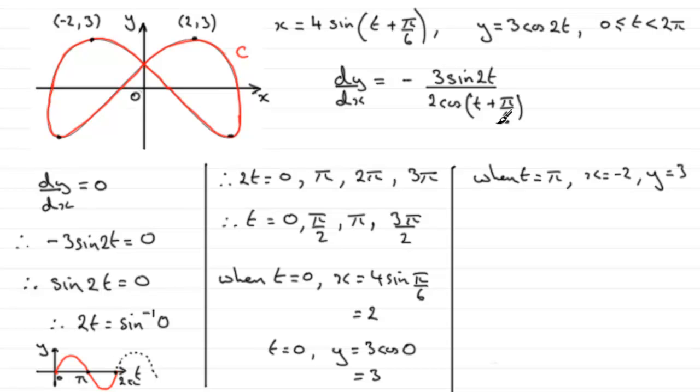When t equals pi upon 2, we get one of the values at the bottom here. When t equals pi upon 2, if you substitute this into here, you'll find that x comes out at 2 root 3,